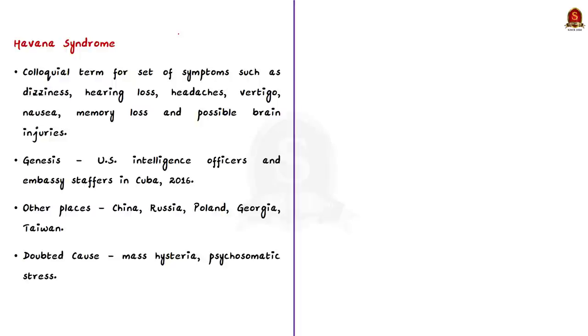First of all, let us see about Havana syndrome. It is a colloquial name given to a set of symptoms such as dizziness, hearing loss, headaches, vertigo, nausea, memory loss, and possible brain injuries. It first affected US intelligence officers and embassy staffers stationed in Havana, Cuba in the late 2016. In the following year, American diplomats in different parts of the world reported similar symptoms. The state department also reported potential cases in China in 2018 which resulted in evacuating state department employees and their families from the city of Guangzhou after cases were reported there. Diplomats and intelligence personals in Russia, Poland, Georgia, and Taiwan have also reportedly been affected.